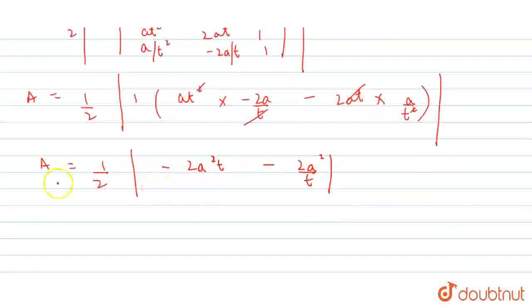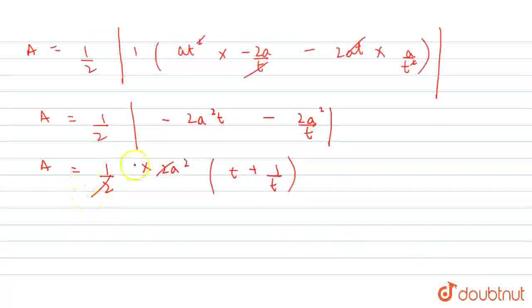Area equals half into 2A² common, so T plus 1/T. The minus sign will also be common and modulus removes the minus. 2 cancels out: A² into (T + 1/T).